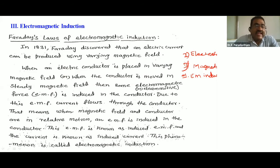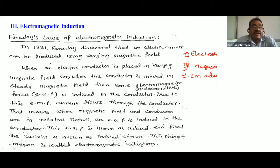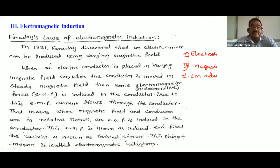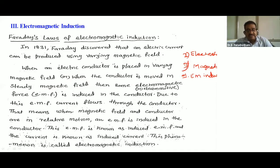Introduction. In 1831, Faraday discovered that an electric current can be produced using a varying magnetic field.